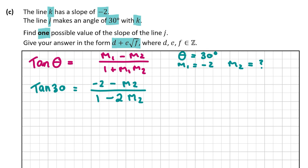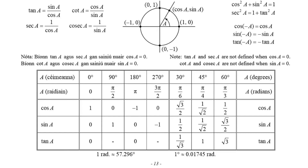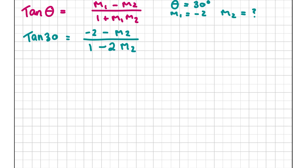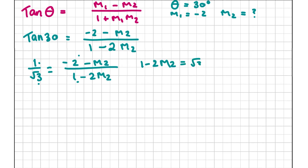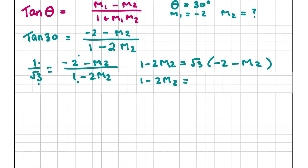Using page 13 of the log tables, tan(30°) = 1/√3. So we have 1/√3 = (-2 - M2) / (1 - 2M2). Cross-multiplying: 1×(1 - 2M2) = √3×(-2 - M2), giving us 1 - 2M2 = -2√3 - √3·M2.